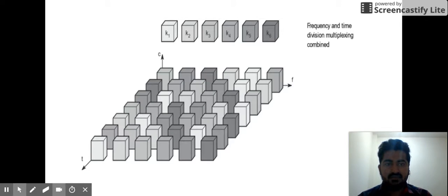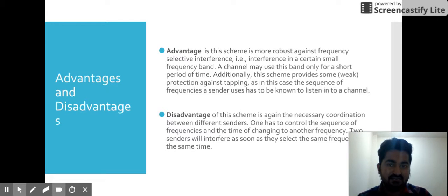We can see it in the diagram also. Every channel has a frequency and time. What are the advantages? This scheme is more robust. A channel may use this frequency for a less period of time, so more utilization and lower wastage of the resources. It also provides protection against tapping.